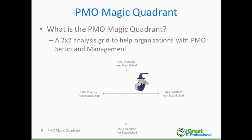Like any other analysis construct, the PMO Magic Quadrant is a two-by-two grid intended to help organizations with PMO management. On the Y-axis is the PMO mandate — is it well established or not well established? The PMO mandate is the qualified purpose and value of the PMO as established and unanimously agreed to by the leadership team. It's a binary choice: well established, yes or no.